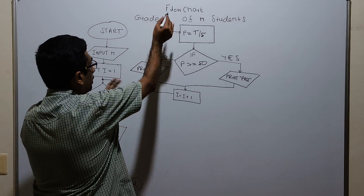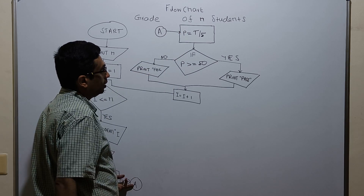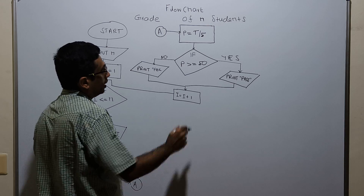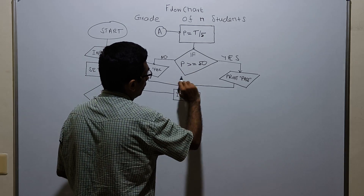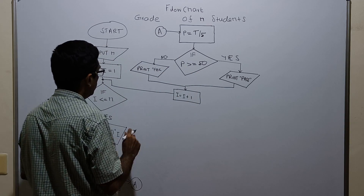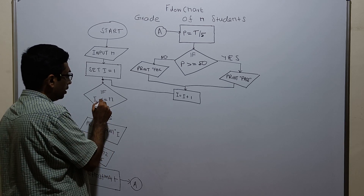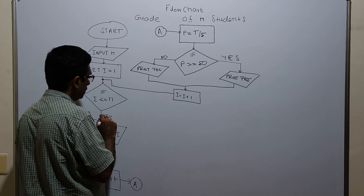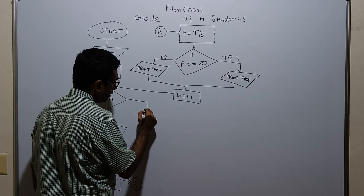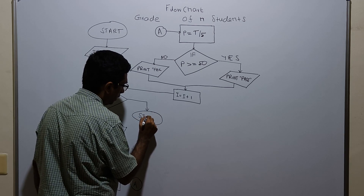This is the same-page connector. After the total, p equals t divided by 5, meaning percentage equals total divided by 5. I am checking if percentage is greater than or equal to 50 — if true, print pass; otherwise, p is less than 50, print fail — and connecting the flow line back to the decision statement. If i less than or equal to n is false, meaning i is greater than n, I am ending this flowchart with a logical end.